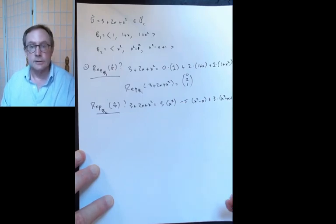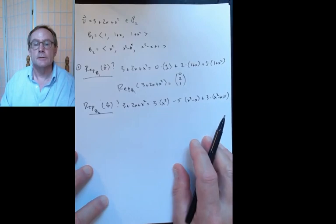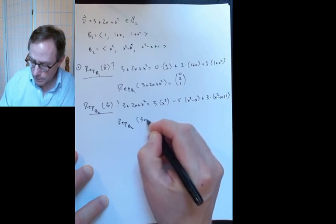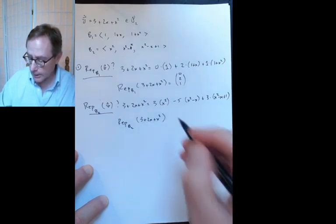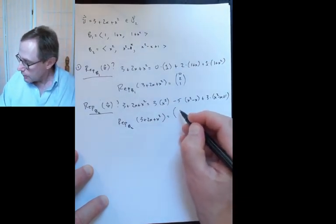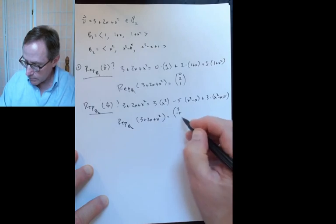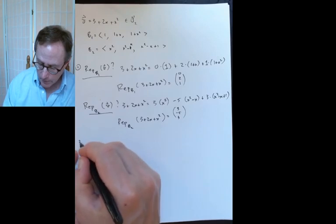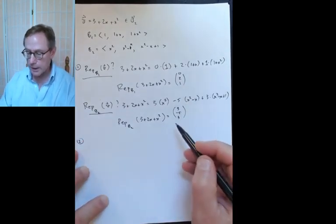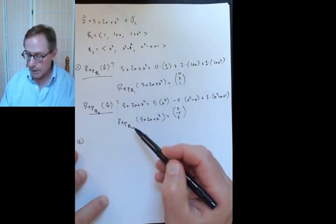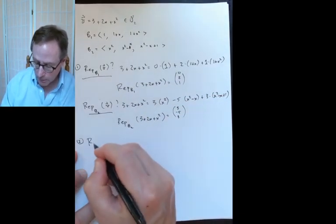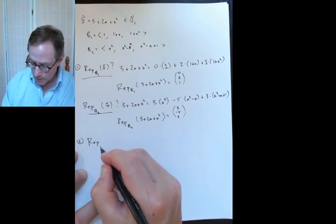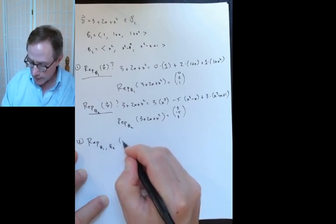I could do Gauss's method, but I'm able to eyeball the answer. So the representation with respect to B2 of V = 3 plus 2x plus x squared is (3, minus 5, 3). Now for the second part: how do you convert from a representation with respect to B1 to one with respect to B2? We saw last time that if you draw the picture right, the maps tell you what to do. We want the B1, B2 representation of the identity map.